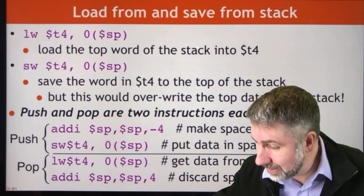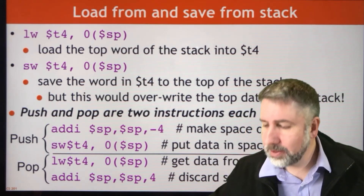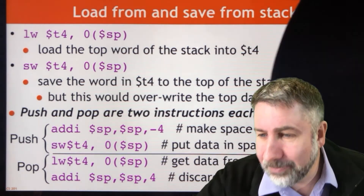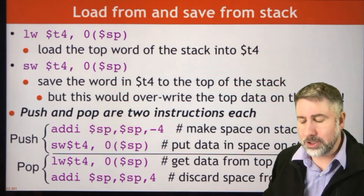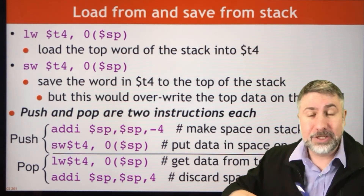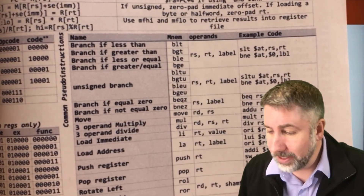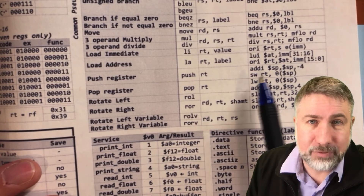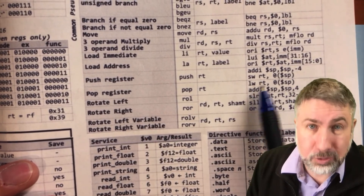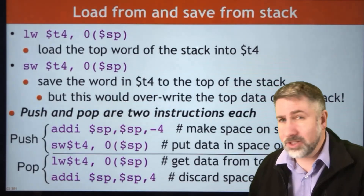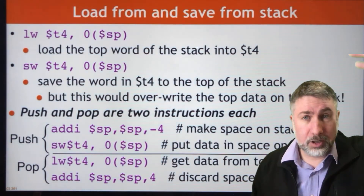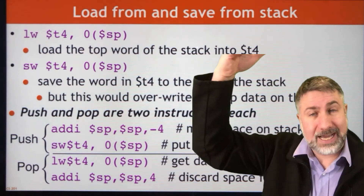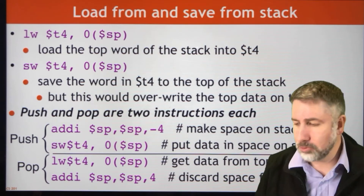So push is add immediate by negative 4 and then store, and pop is load and then add immediate by 4. If we look at the pseudo instructions on our sheet, we can see that push and pop are already there — push is add immediate by negative 4 followed by store, and pop is load followed by add immediate by 4. The stack grows towards smaller addresses, so we subtract from the stack pointer as we move up the stack and add to the stack pointer as we move down.